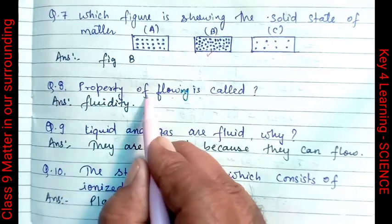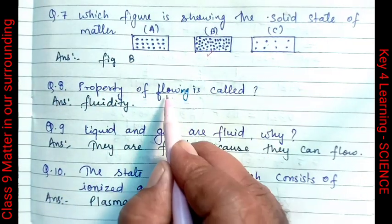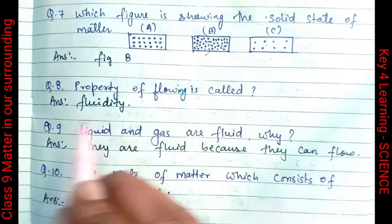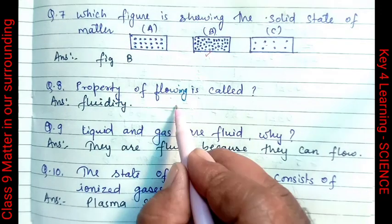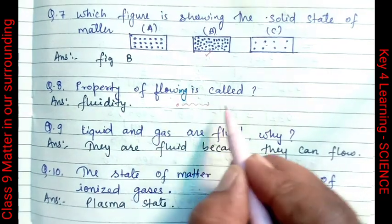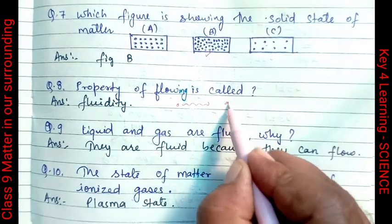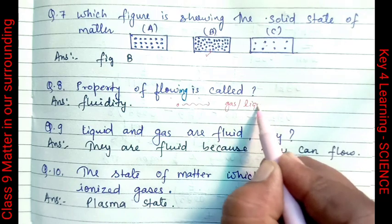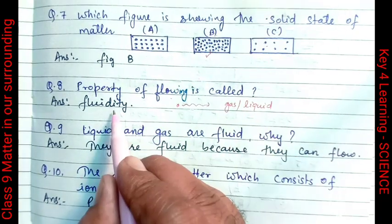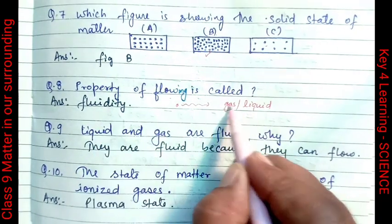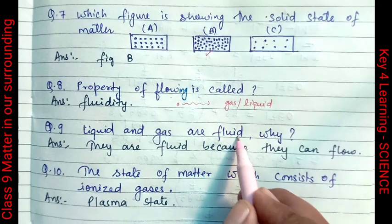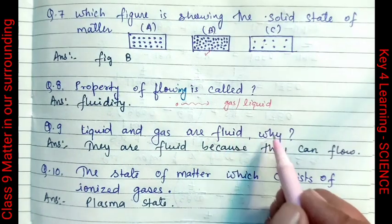Question number 8: The property of flowing is called fluidity. The particles in gas and liquid can flow, so we call this property fluidity. Liquid and gas are fluids.